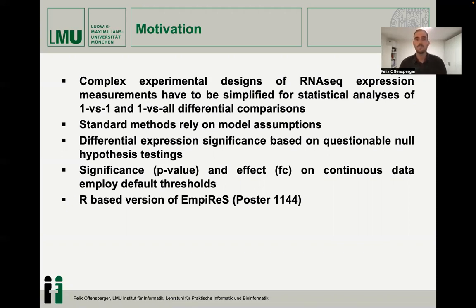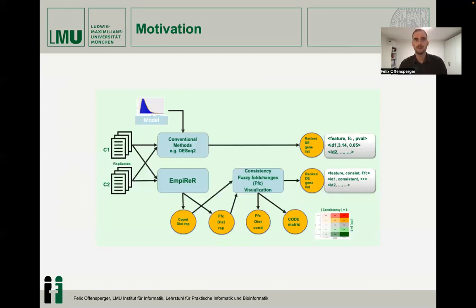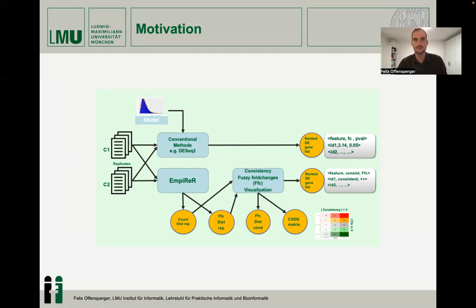Empire R is an R-based version of Empire S, also presented here at the ISMB. In contrast to conventional methods for differential expression of replicate data, like DESeq-2, which use model assumptions to compute the ranked gene list, the fold change and p-value, Empire R employs a FASI value-based representation of count data.